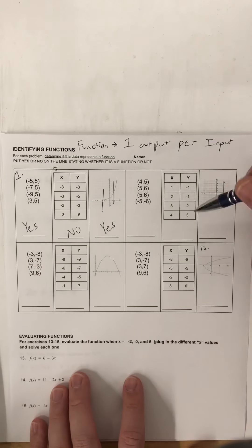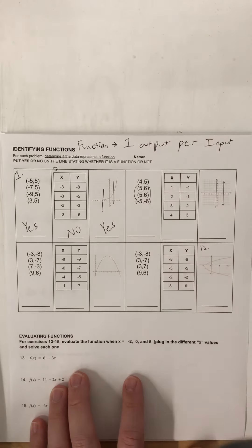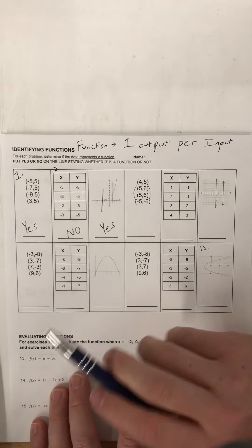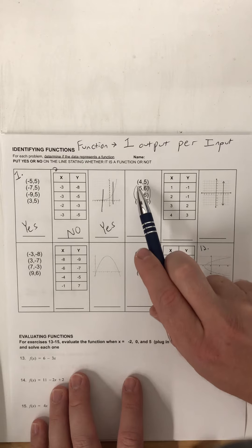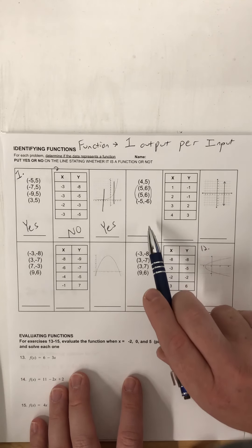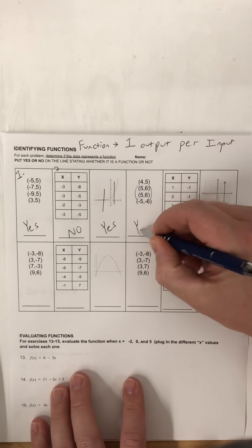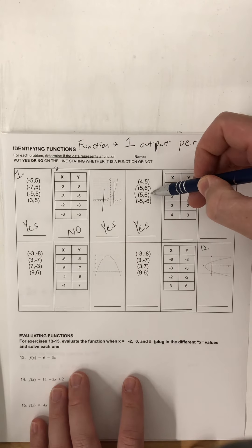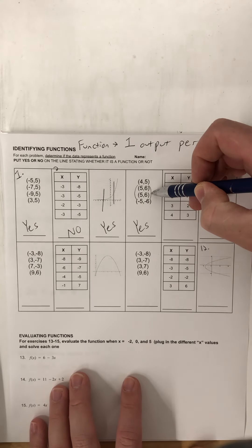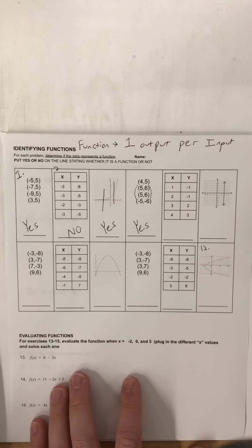This point right here — five comma six, five comma six — think of that as the same dot, the same exact coordinate point. If we look at the other inputs, negative five and four, each input only has one output. So yes, this is a function. If there is a repeat coordinate point like that, don't be confused — it still only has one output, so it is a function. Look at that — four of them already done!